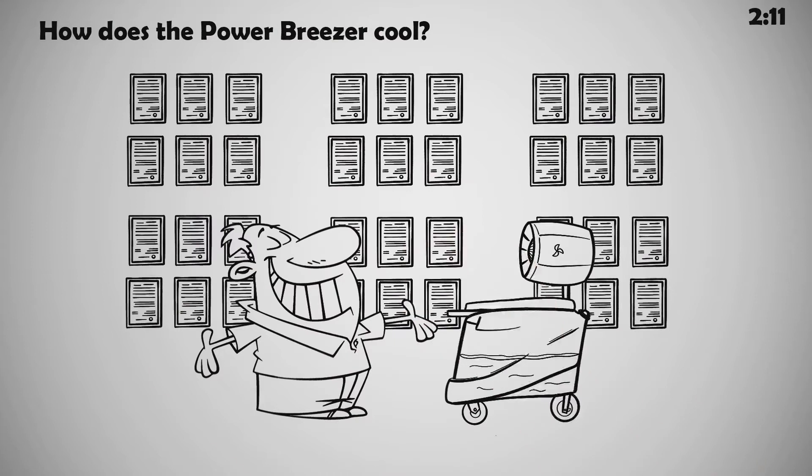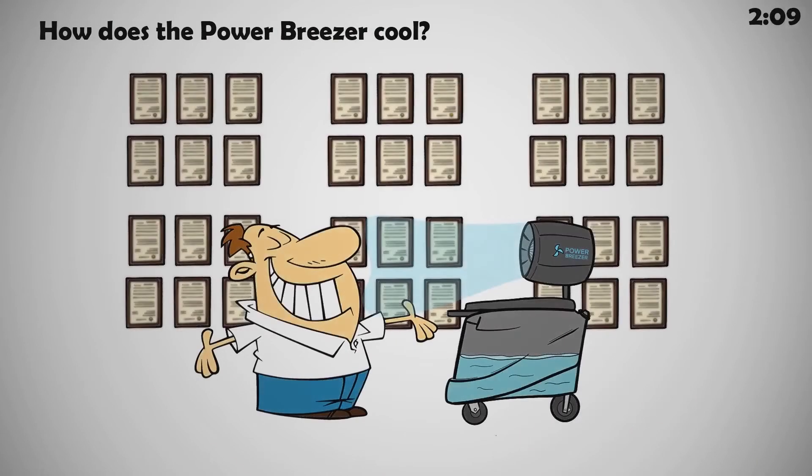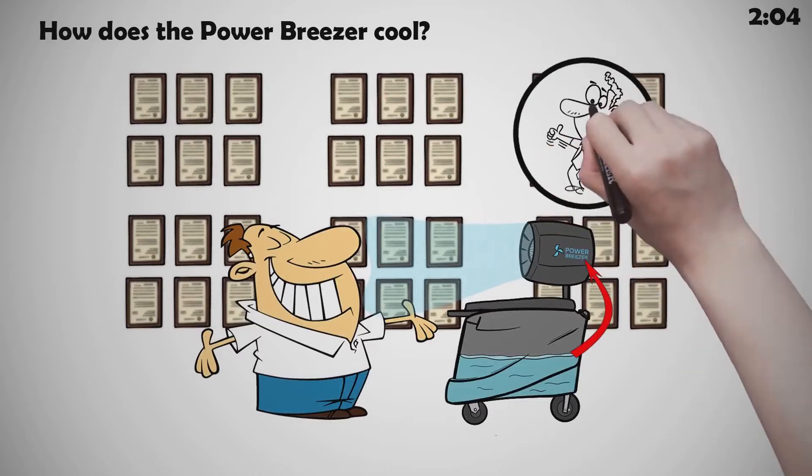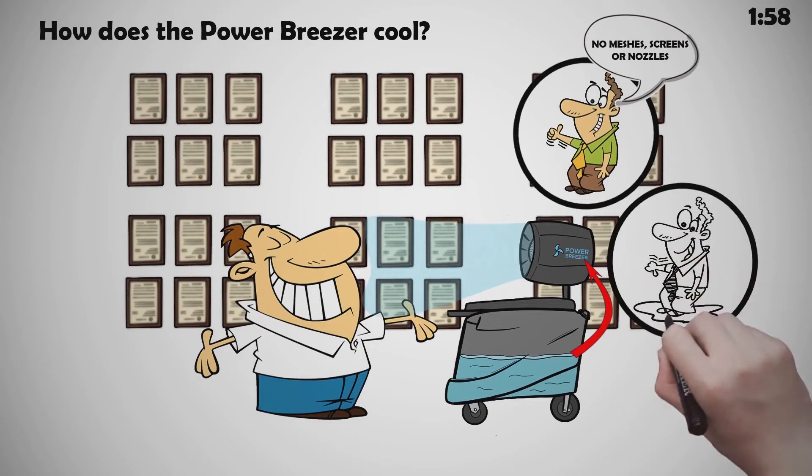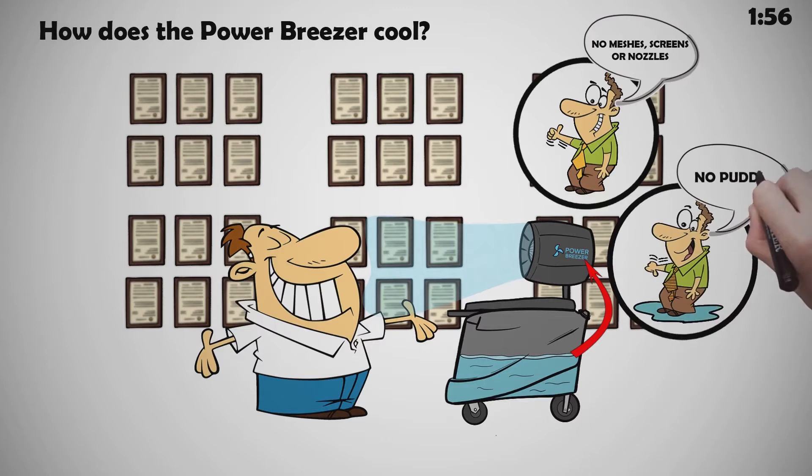This is where much of the Power Breezer's technology resides. Reliably reducing drops of water into mist does not require the use of meshes, screens or nozzles. These often clog or cake, reducing the flow and causing floor puddles.